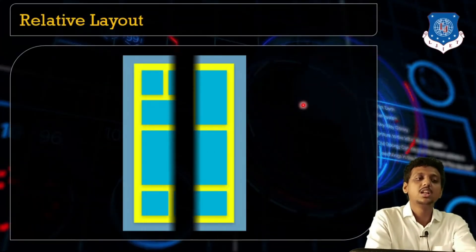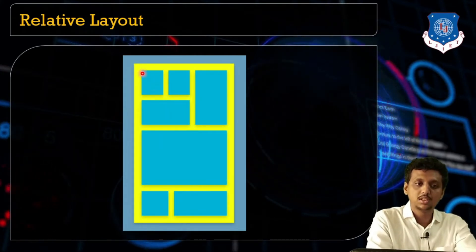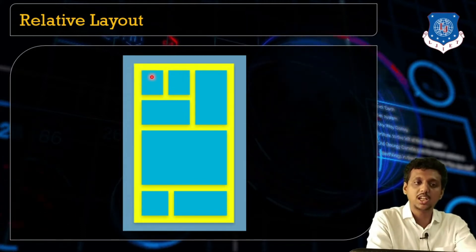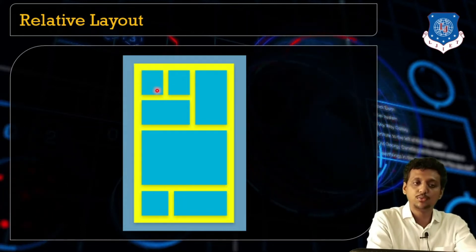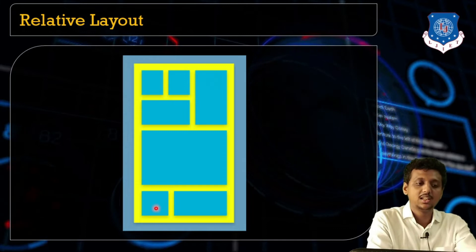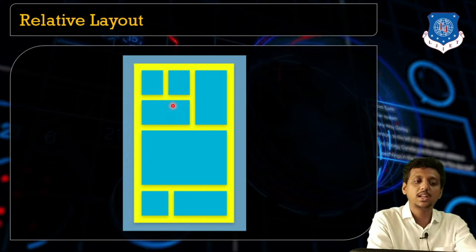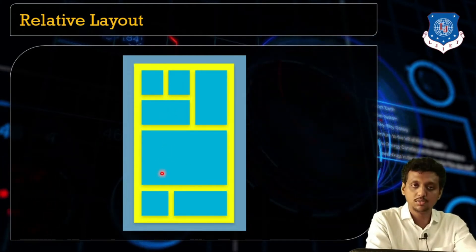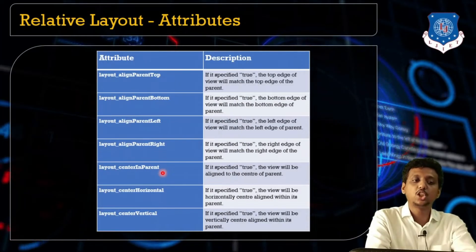In the Relative Layout, View 1 is on the left side at the top. Always remember, the starting position in a Relative Layout or any other layout is (0, 0) — the top-left. This is the top-left, this is the top-center, this is the top-right, this is the bottom-left, and this is the bottom-right. You also need to specify whether a view is above or below another view component, and set its position accordingly.